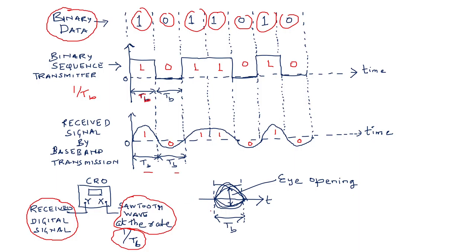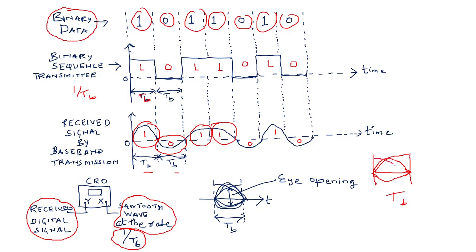On the CRO, all received waveforms are plotted on a single interval of width Tb. First, the received waveform for the first '1' is drawn, then the '0' is drawn in the same interval, then the next '1', then the other '1', and then the '0'. Each bit's received waveform is overlaid within this single Tb interval.